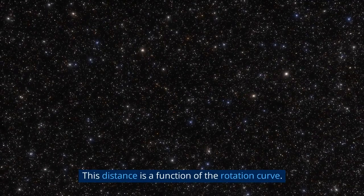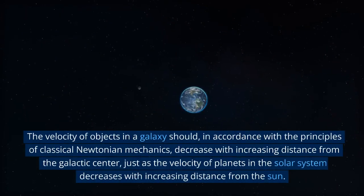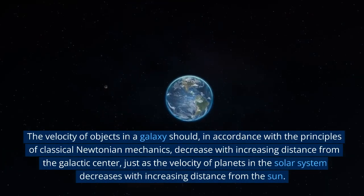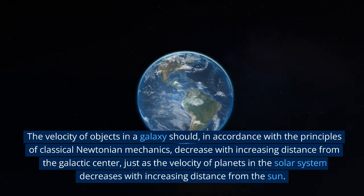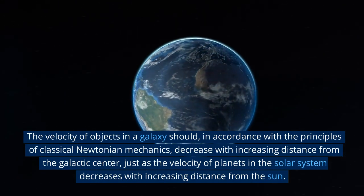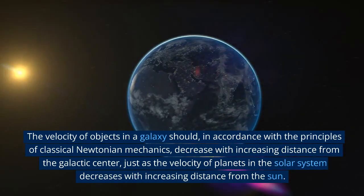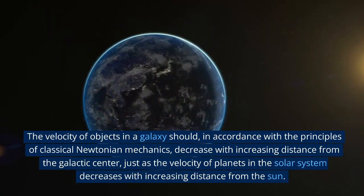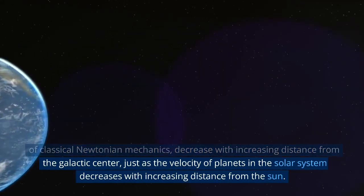The velocity of objects in a galaxy should, in accordance with the principles of classical Newtonian mechanics, decrease with increasing distance from the galactic center, just as the velocity of planets in the solar system decreases with increasing distance from the sun.